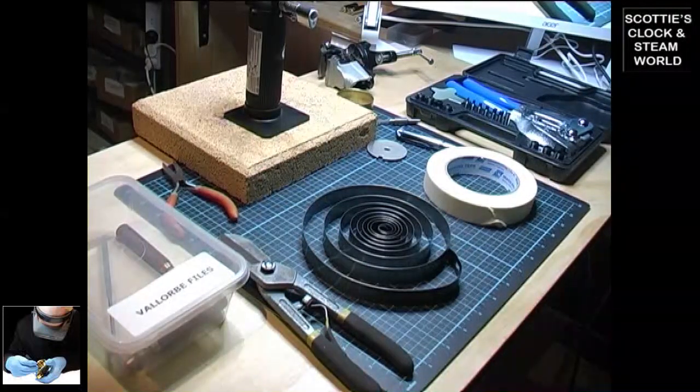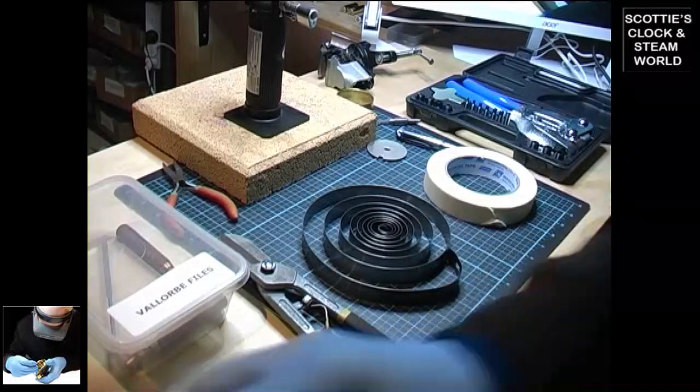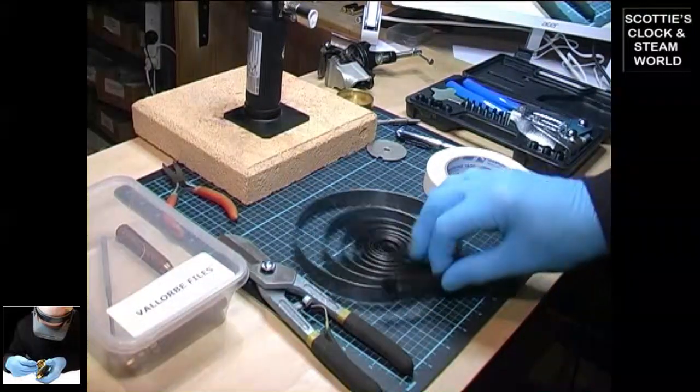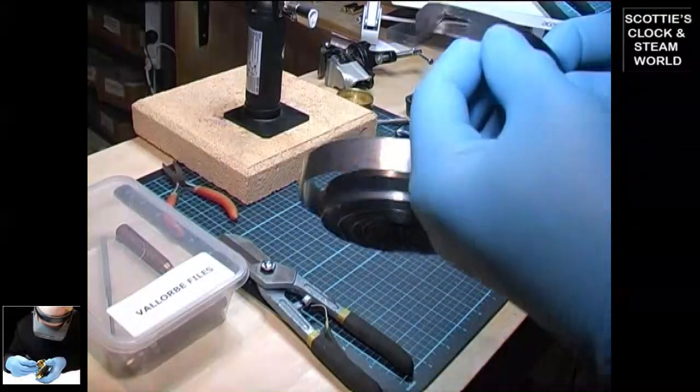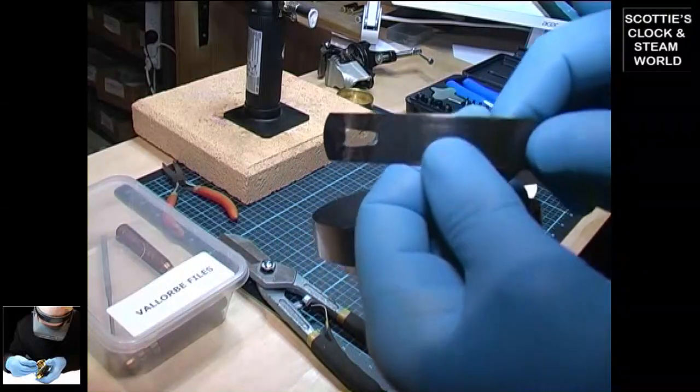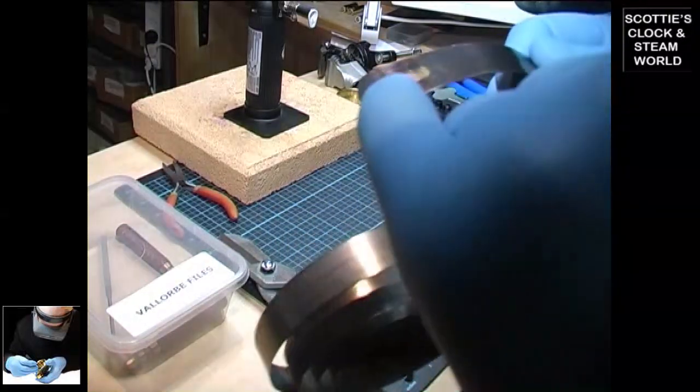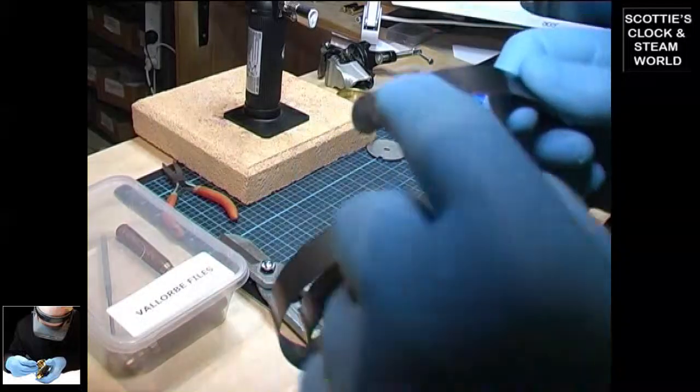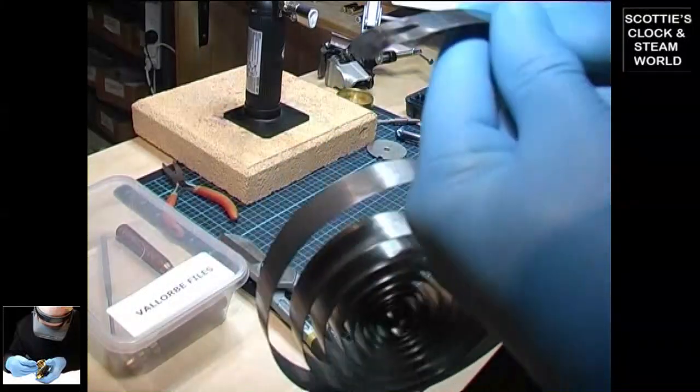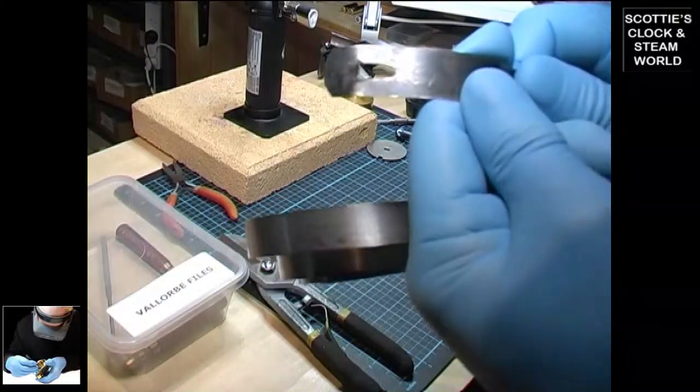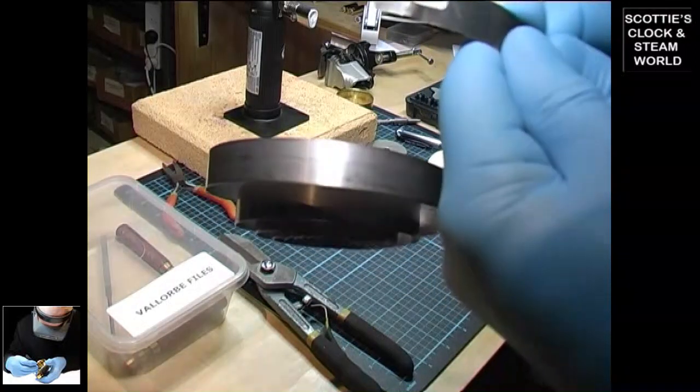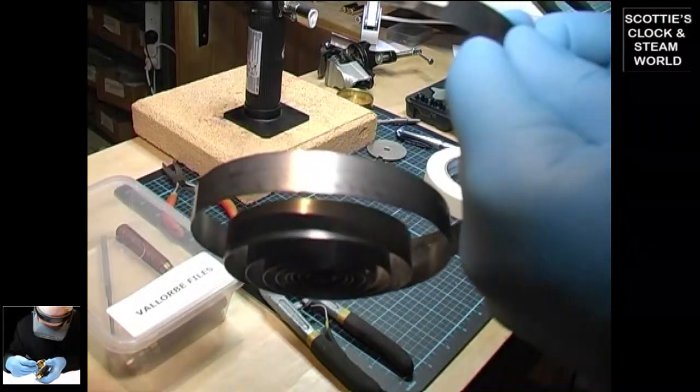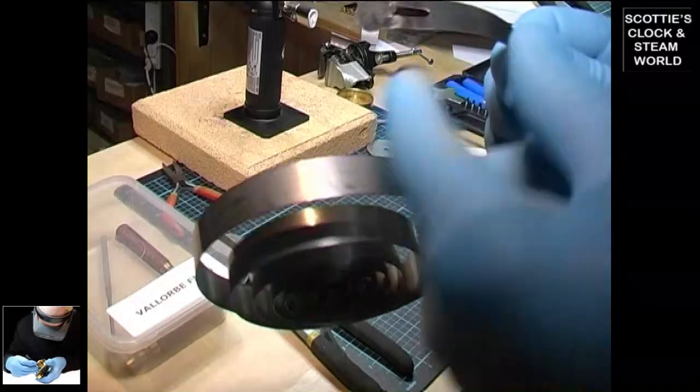Okay let's get started. This is a mainspring we're going to repair. You can see it's cracked either side and it's got a bit of a lip on it here that's waiting to break inside a barrel and destroy some of your wheels when that snaps.